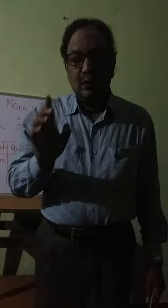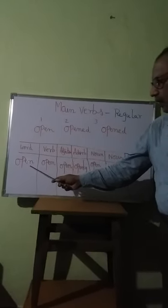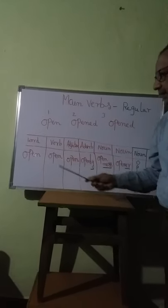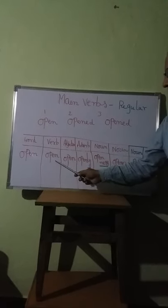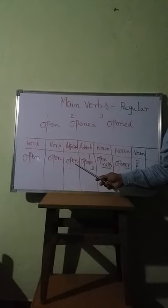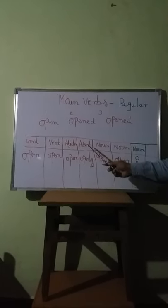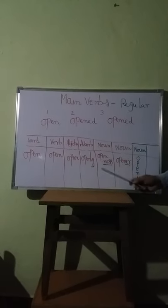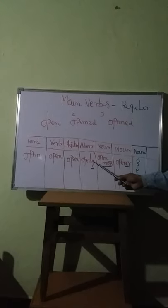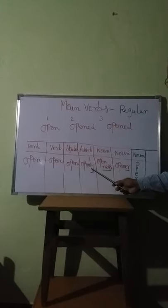Now, you should know something else. Look at the blackboard again. Open is the main verb here. But sometimes, it can also act as an adjective. Now, look here — 'openly.' Sometimes, it can be an adverb by adding the suffix '-ly' to it. Openly is an adverb.